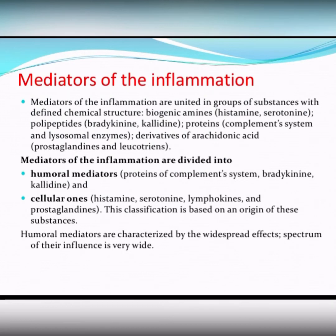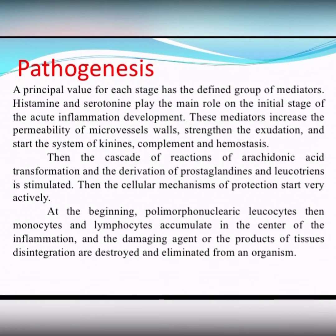A principal value for each stage has a defined group of mediators. Histamine and serotonin play the main role in the initial stage of acute inflammation development. These mediators increase the permeability of microvessel walls, strengthen the exudation, and start the system of complement and hemostasis. You remember about the role of histamine and serotonin from the topic of allergy and their effects on our organism.